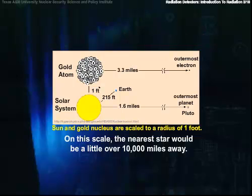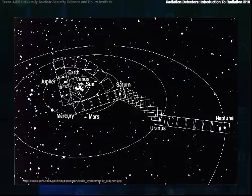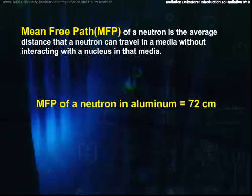Neutrons show that this emptiness in atoms is true. Think about how often you would have to shoot a laser beam at random into the solar system to finally hit the sun. The mean path for a neutron is often over 10 centimeters, and for aluminum, it's 72 centimeters.